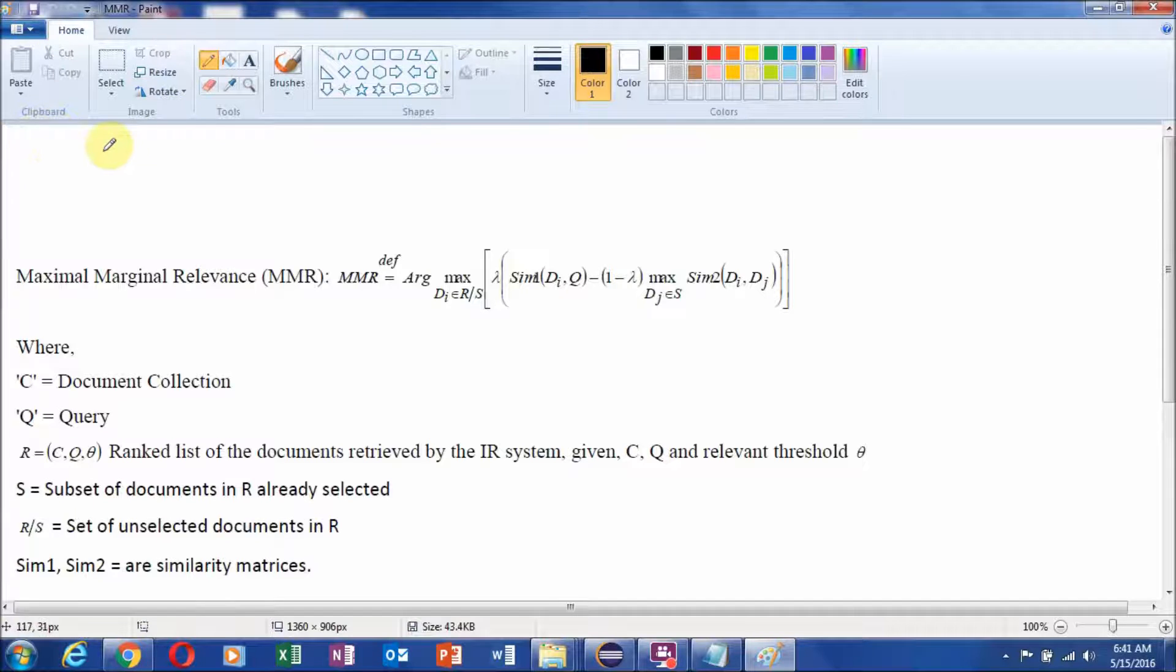To understand the maximum marginal relevance, we will first go through a simple example. Suppose we have query Q and set of documents like D1, D2, D3, D4, D5 and so on.